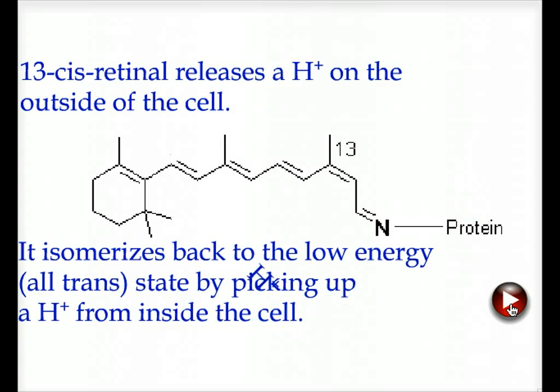As a result of this change in shape, 13-cis-retinal releases a hydrogen ion on the outside of the cell. It isomerizes back to the low-energy all-trans state by picking up a hydrogen from inside the cell.